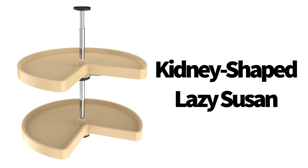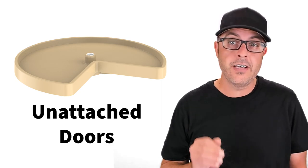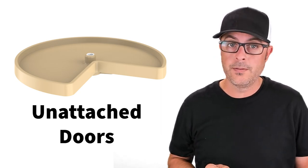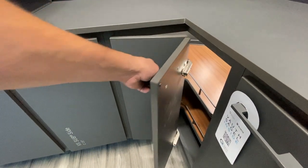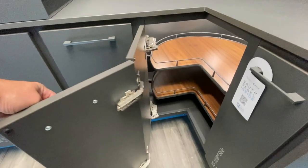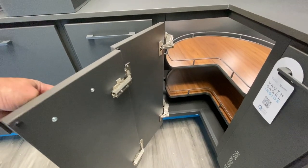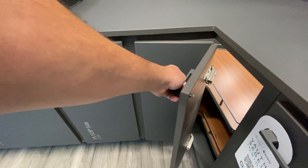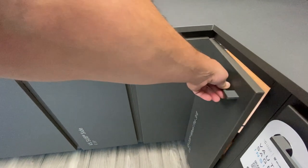First on the list is the kidney-shaped Lazy Susan. These are designed to work with corner cabinets that have unattached double folding doors. As you see here you have a door that opens and swings open, therefore the kidney Susan is just sitting in the cabinet by itself and not attached to the door.